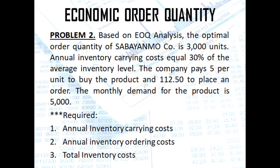Let's proceed to our second problem. Based on EOQ analysis, the optimal order quantity of Sabayan Mo company is 3,000 units. So given in the problem is our EOQ. Annual inventory carrying cost equal 30% of the average inventory level. The company pays 5 pesos per unit to buy the product and 112.5 pesos to place an order. The monthly demand for the product is 5,000.